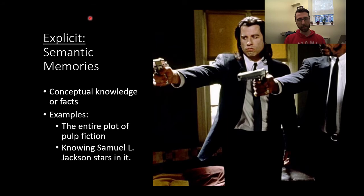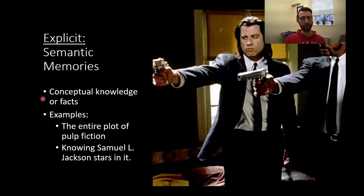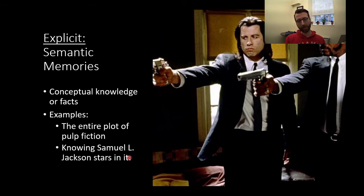We can further subdivide explicit memories into semantic and episodic. Semantic is conceptual knowledge or facts — like knowing the entire plot of a movie like Pulp Fiction, or knowing that Samuel L. Jackson stars in that movie. That's semantic information.